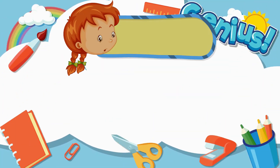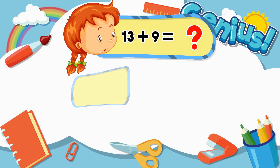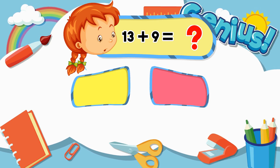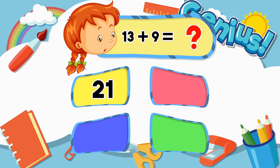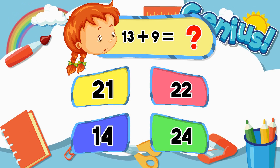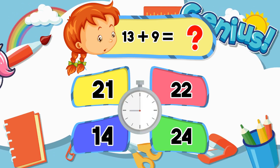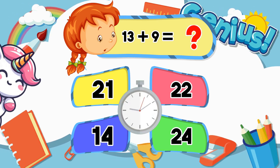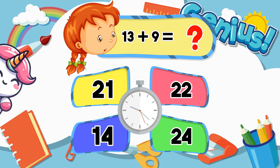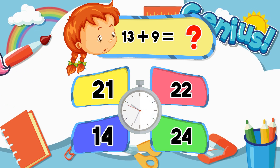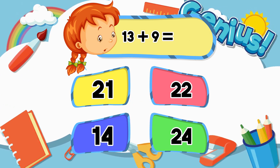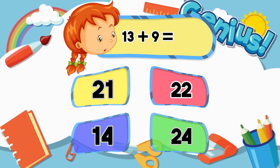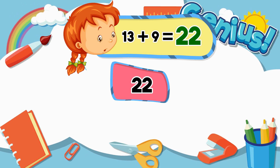What is 13 plus 9? 21, 22, 14, 24. Answer: 22.